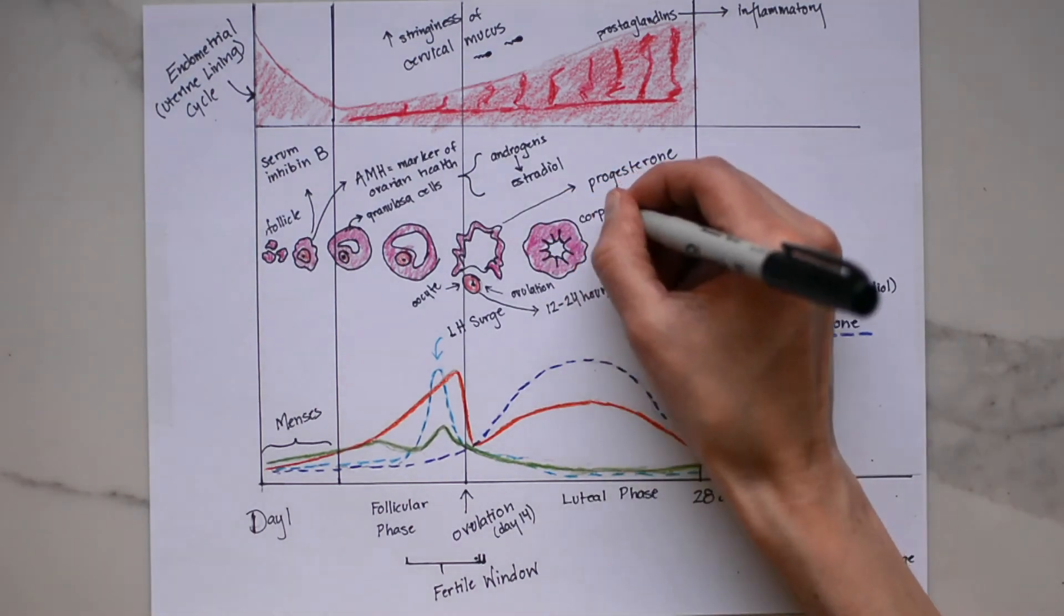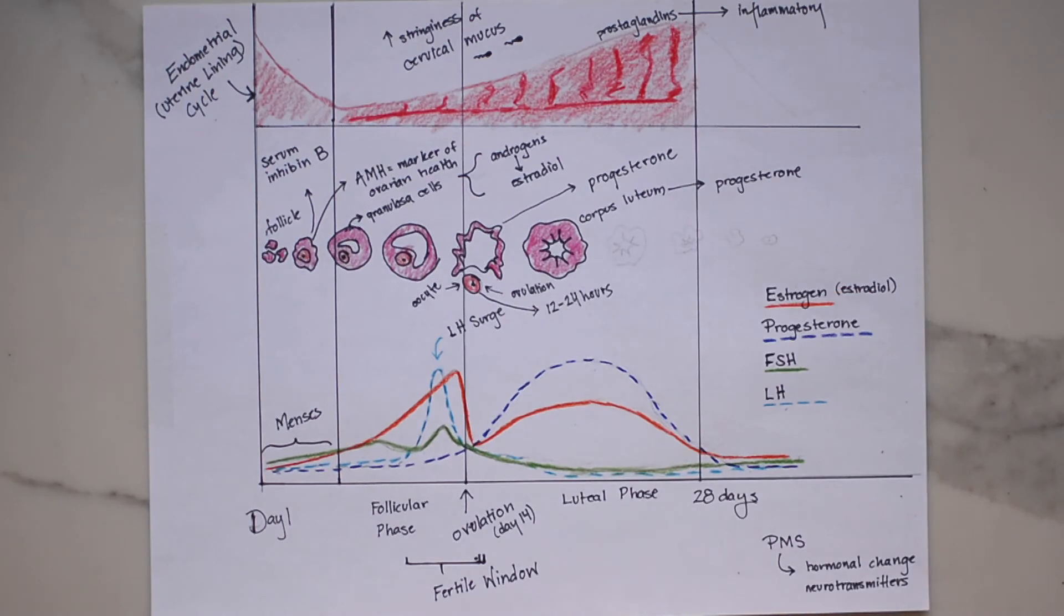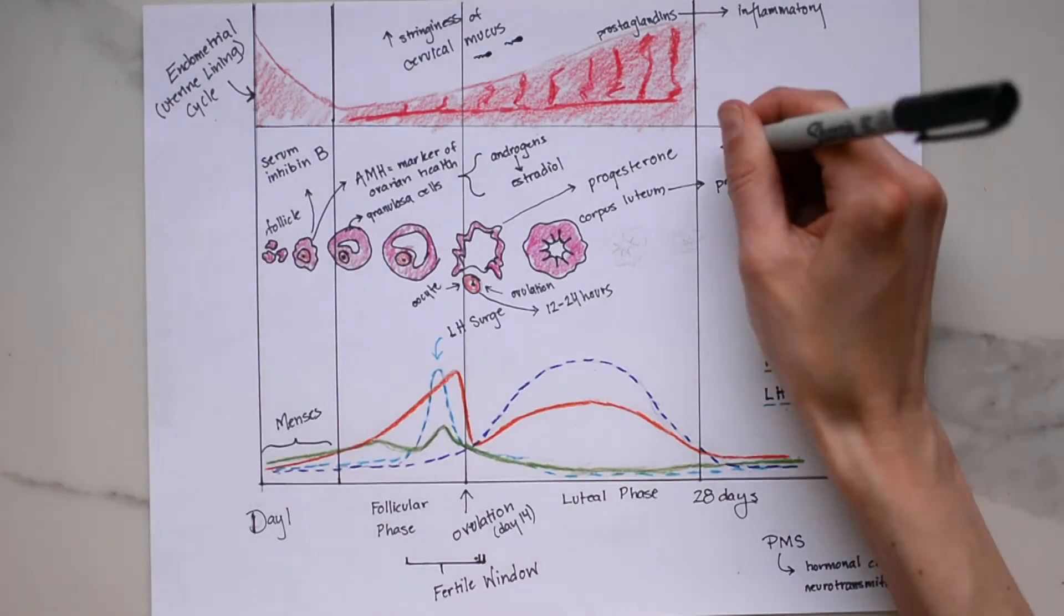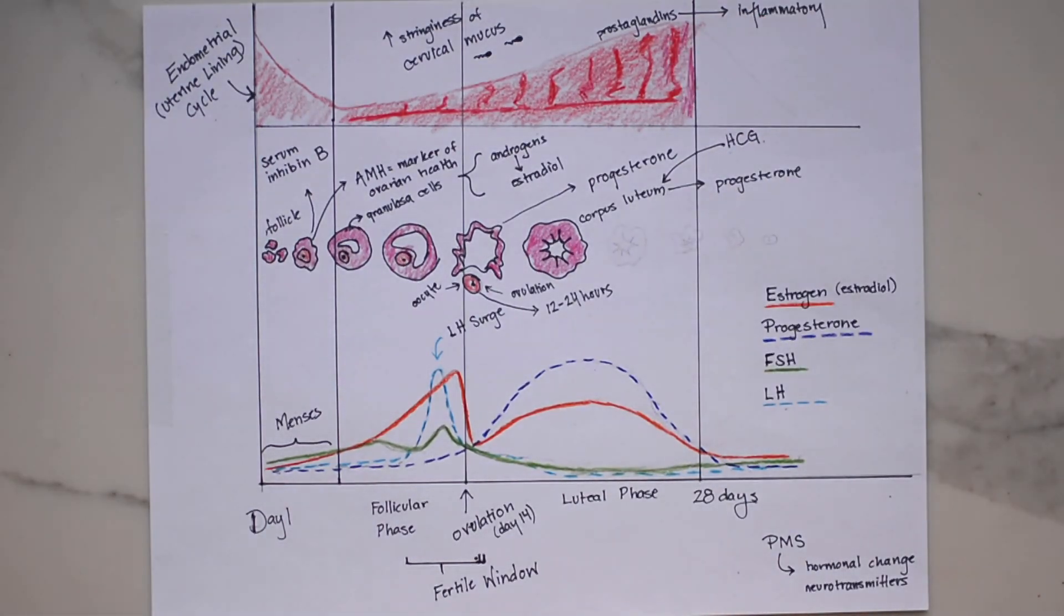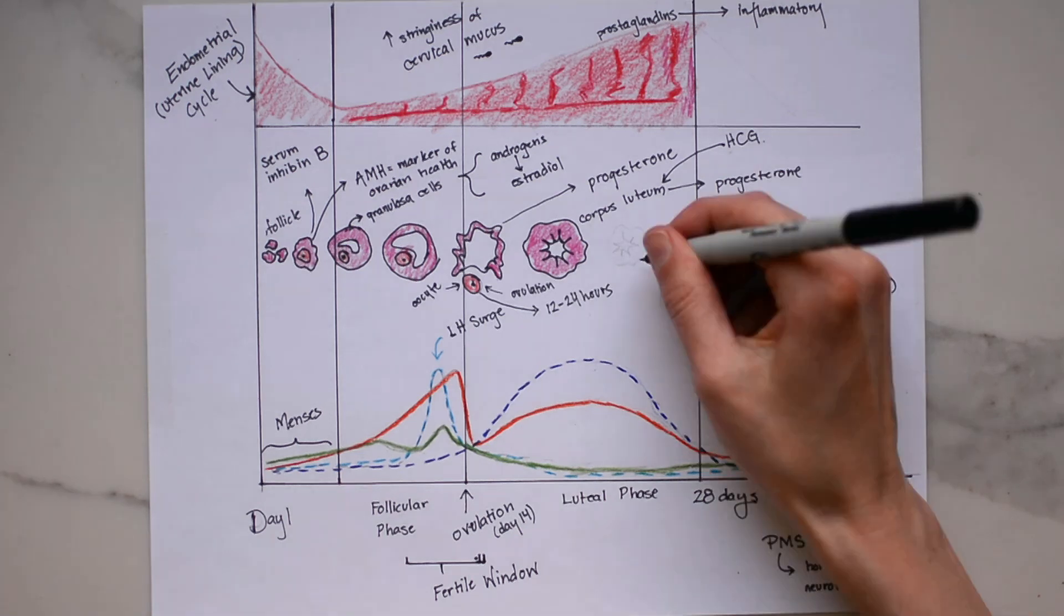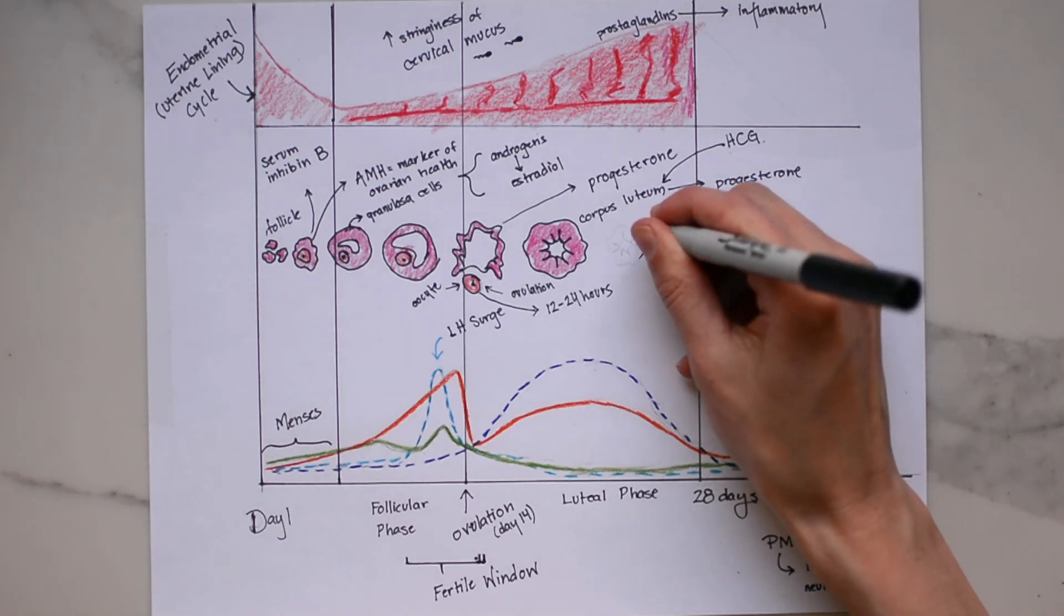Now if the egg is fertilized in the fallopian tube and it travels down to the uterus and implants into the endometrium successfully, the cells of the developing egg start to produce HCG, human chorionic gonadotropin. This is what's measured when determining if a woman is pregnant early on. So the urine pregnancy test or the blood tests all measure HCG and HCG signals to the corpus luteum to continue to produce progesterone which maintains that thick lining of the uterus and adequate blood supply. Now if there is not enough progesterone this can result in a miscarriage. That is why for some women who are struggling with fertility they will be prescribed progesterone. The corpus luteum secretes progesterone until the placenta takes over at about seven to nine weeks of gestation.